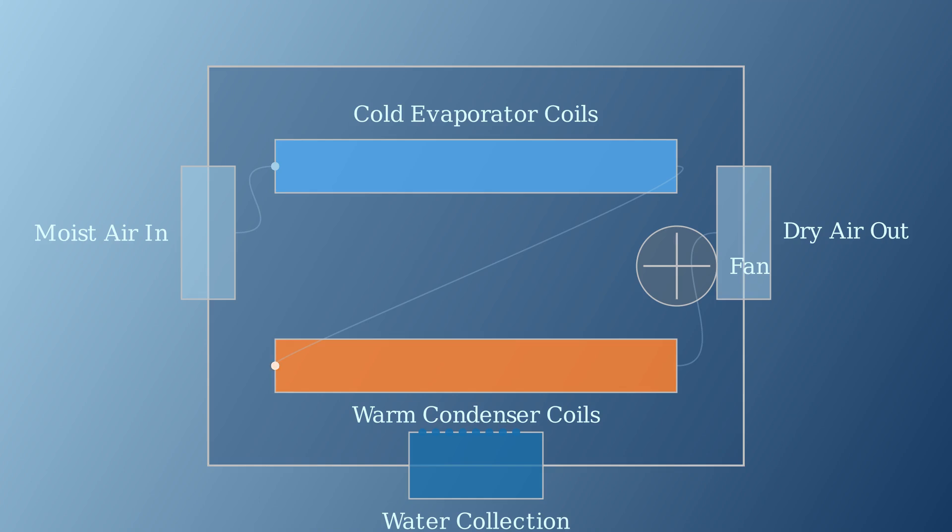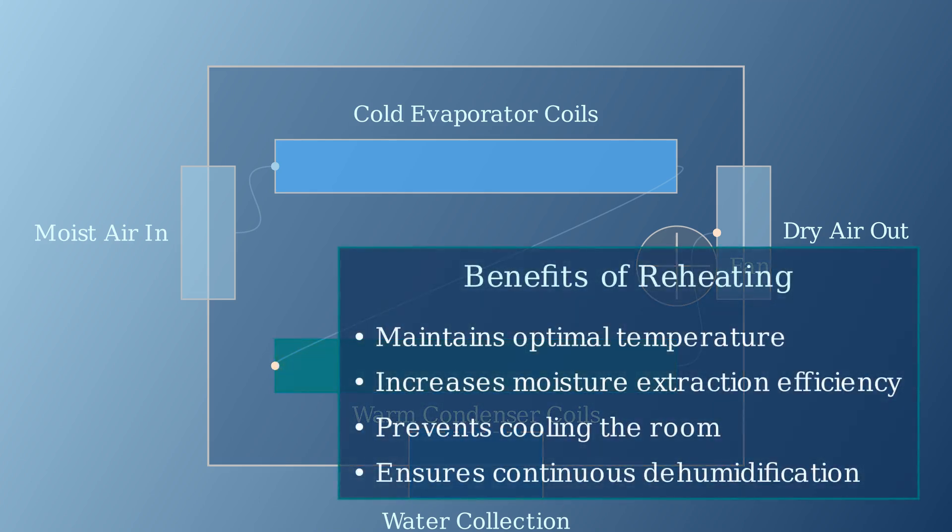This second stage is critical. It reheats the air before it's released back into the room. The reheated air then exits the dehumidifier and returns to the room. Notice that the air is now both dry and warm. This reheating process serves several critical functions in the dehumidification process.